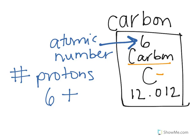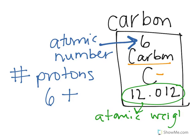The number at the bottom is called the atomic weight. If we took the average weight of all of the carbon atoms in existence, the weight would be 12.012. We're going to get into isotopes in another video — those are variations on atoms with different numbers of neutrons — but suffice it to say that the average weight for carbon is 12.012.